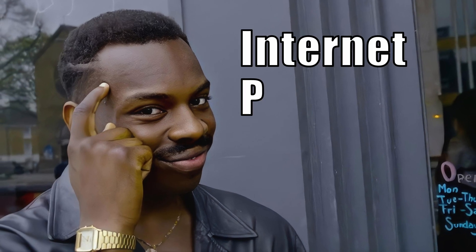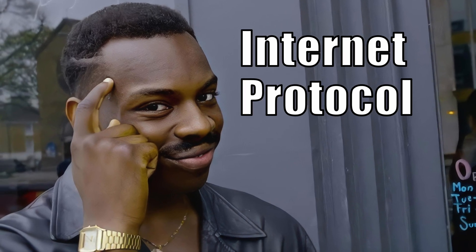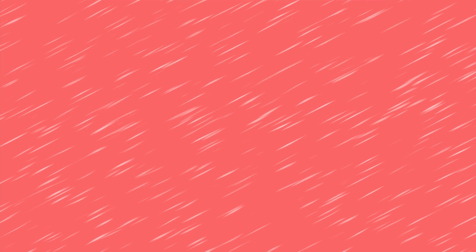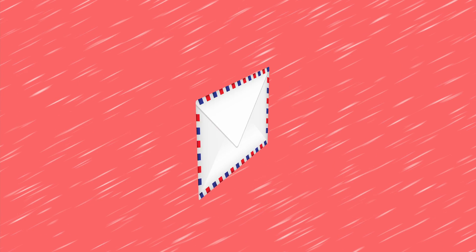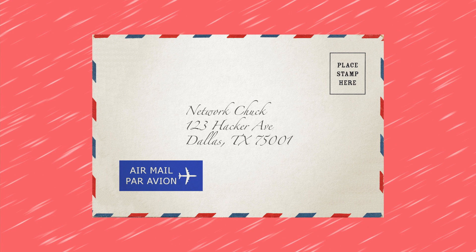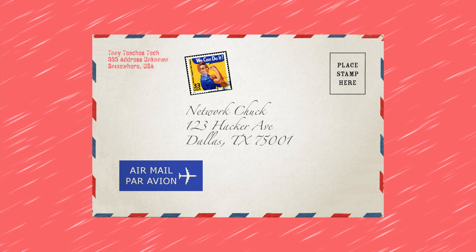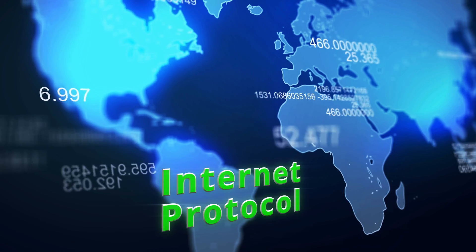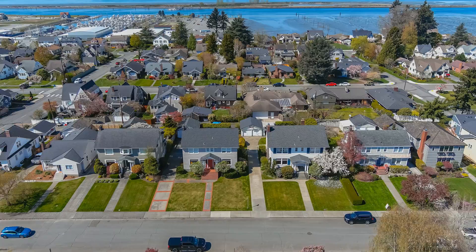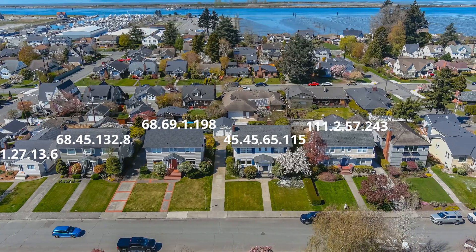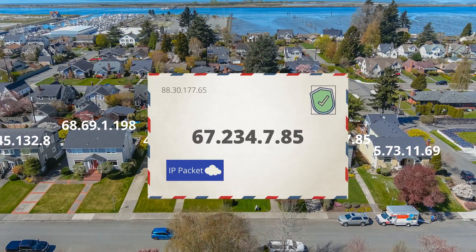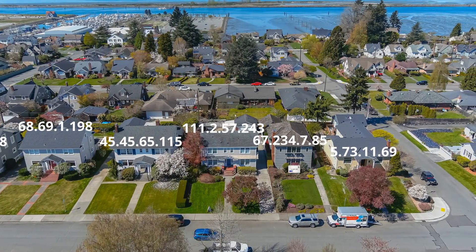First of all, IP stands for internet protocol. By definition, a protocol is an official procedure. So just like there is an official protocol when you send a letter in the mail — a properly formatted address in the middle, a return address in the upper left corner, and a stamp in the upper right corner — the internet also has this set of rules. In this analogy, you can think of houses as computers where each house has an IP address, and you can think of the letter as a packet of information being sent across the internet.